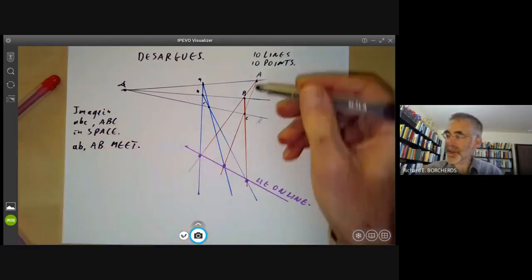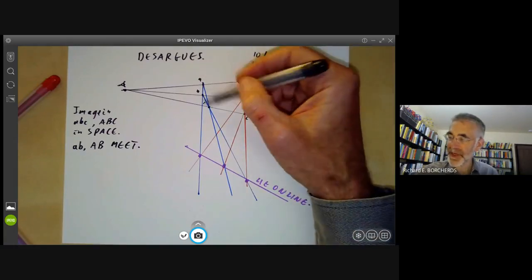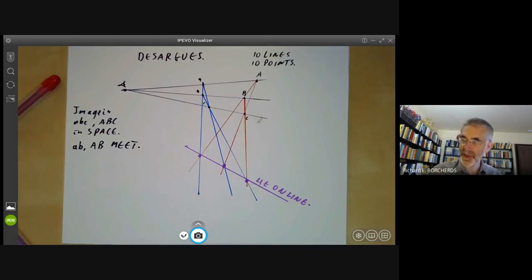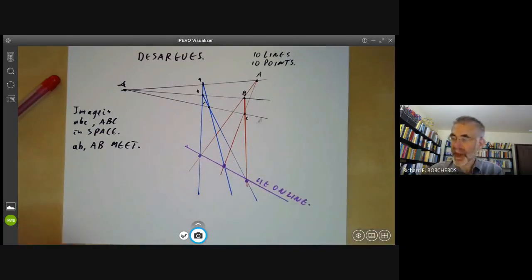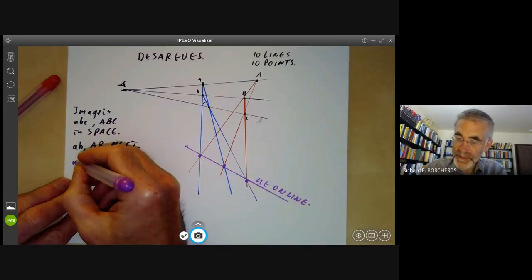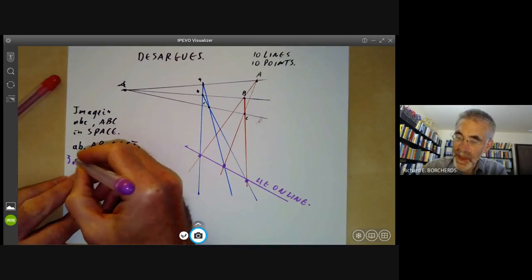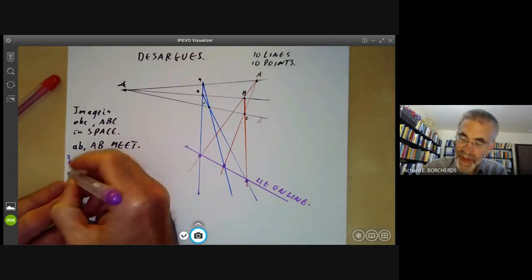And of course, the same thing is true for the lines AC and A'C' and the lines BC and B'C' by symmetry. So these points are actually well defined in space. And now you notice that each of these points, so the three points all lie on, they all lie in the plane containing the triangle ABC.